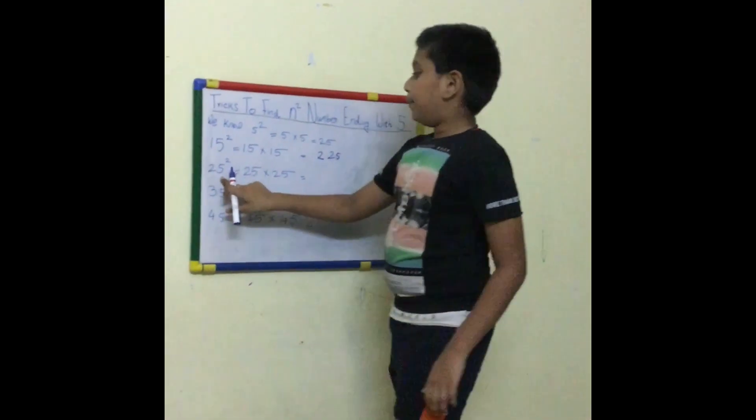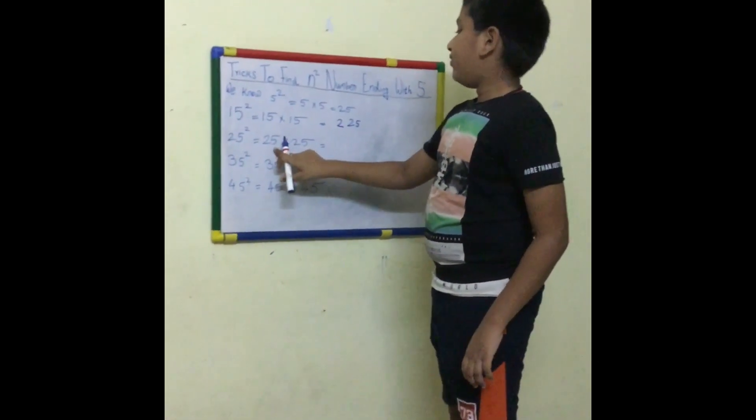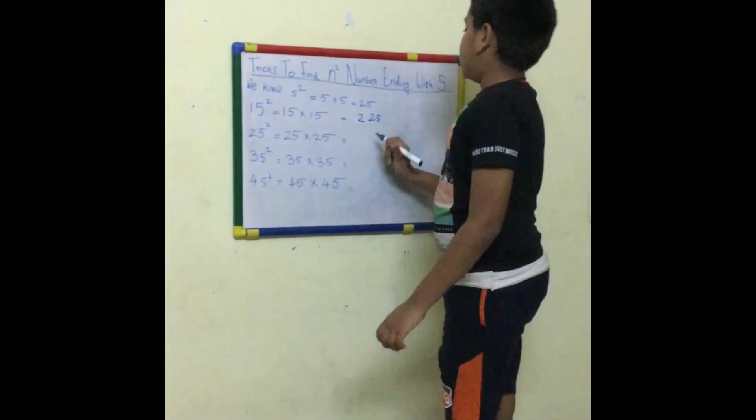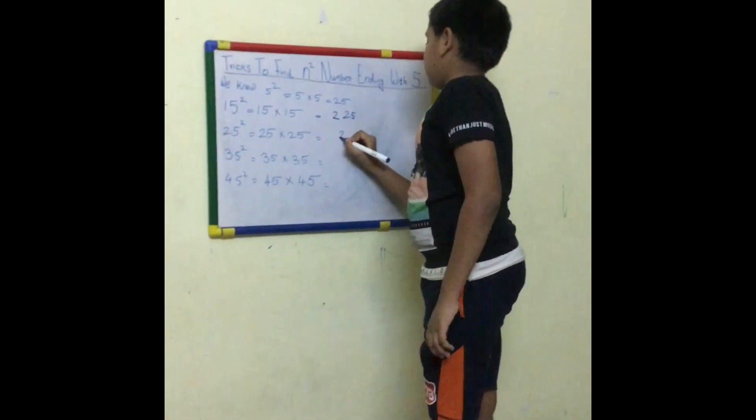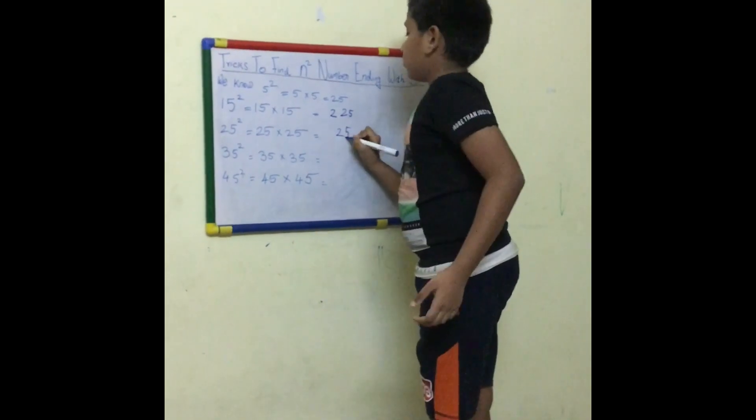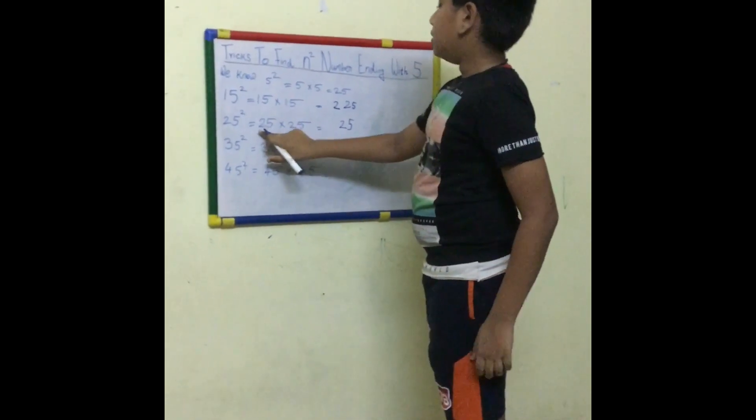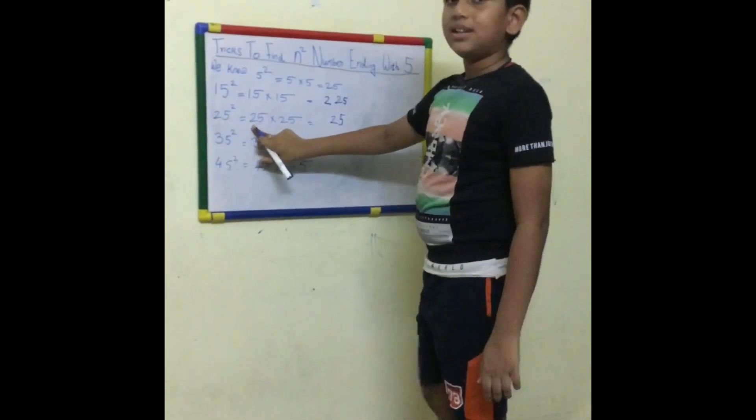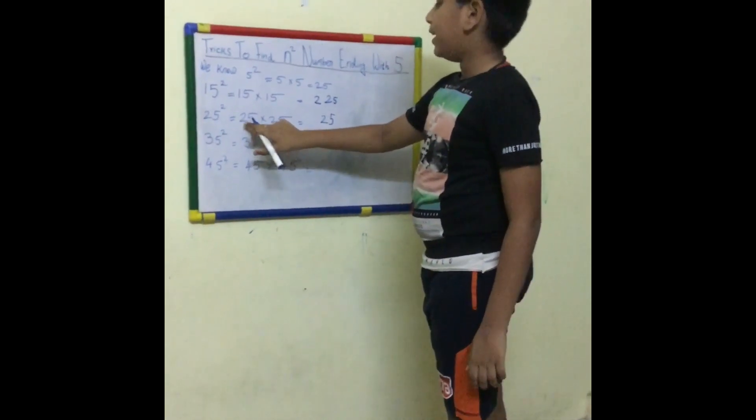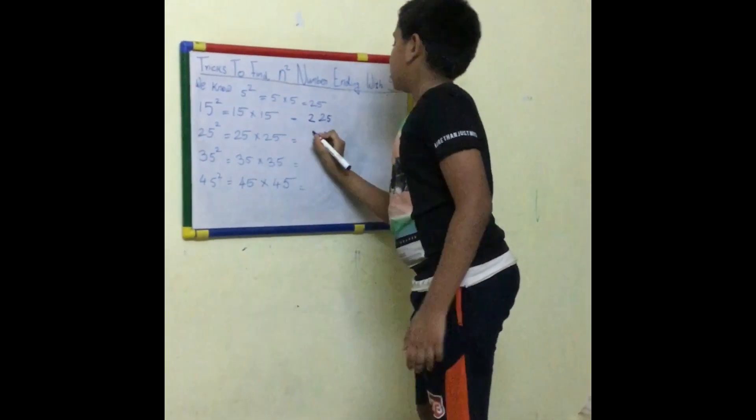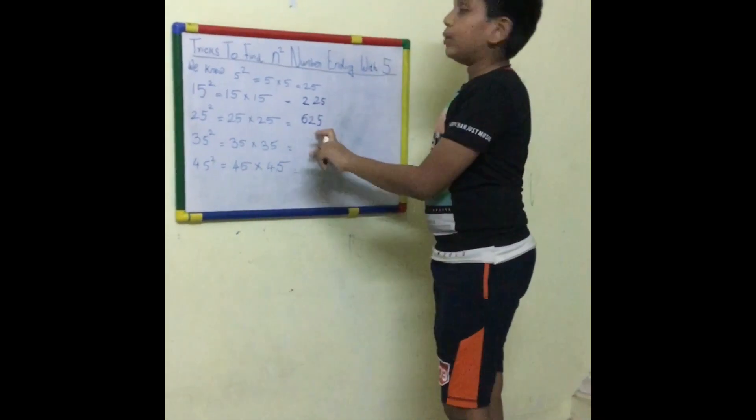25 squared means 25 into 25. So 5 into 5 is 25. We know that 2's successor is 3. So we have to multiply 2 into 3, that means 6. The answer is 625.